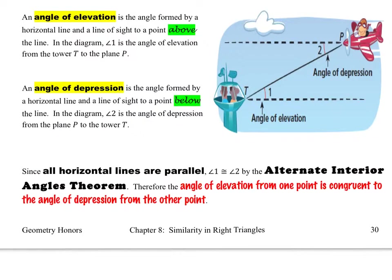Let's move on now. An angle of elevation is the angle formed by the horizontal line and a line of sight to a point above the line. In the diagram, angle 1 is the angle of elevation from the tower T to the plane P. You can see that we start at the horizontal line, the line of sight, and we go upward. Elevate means go up, so you start at the horizontal and go upward for an angle of elevation.